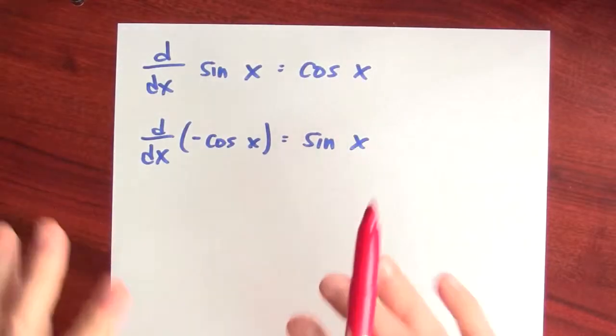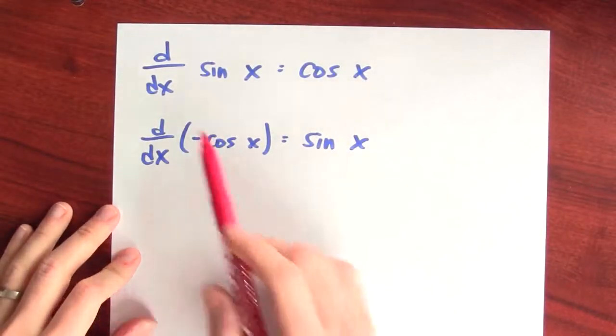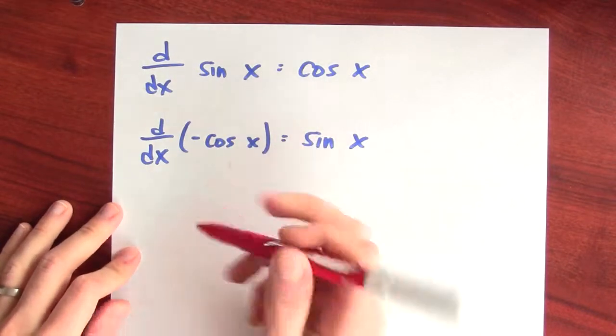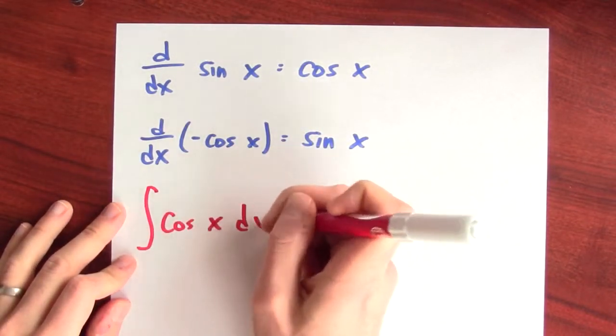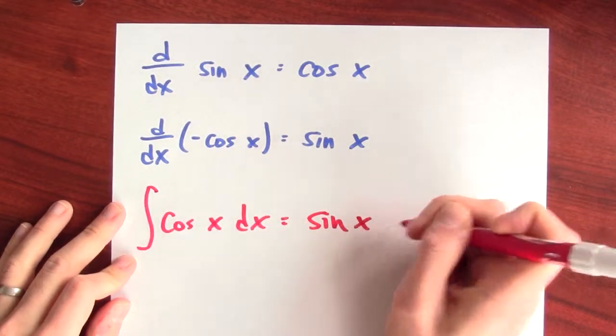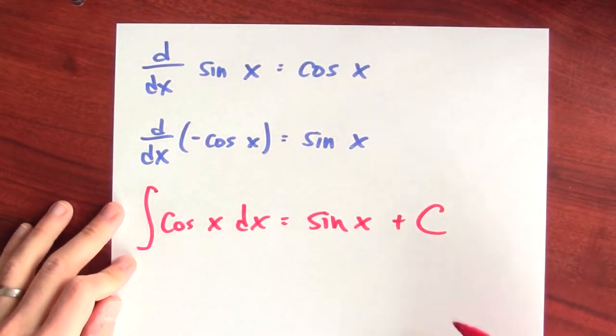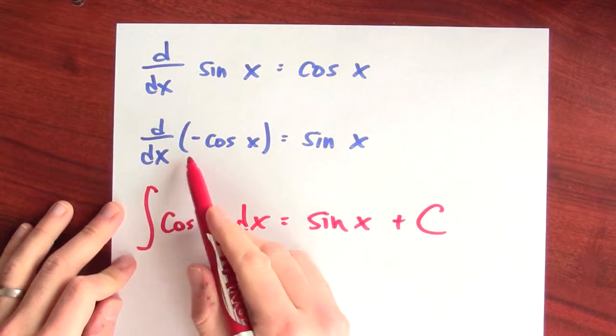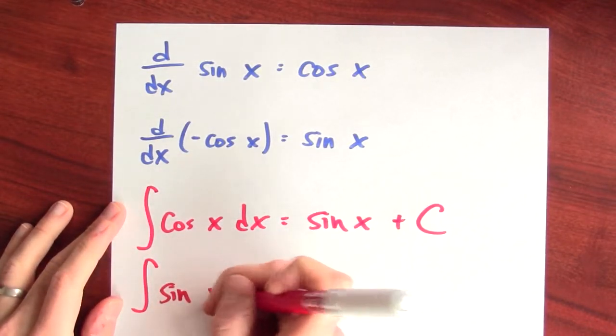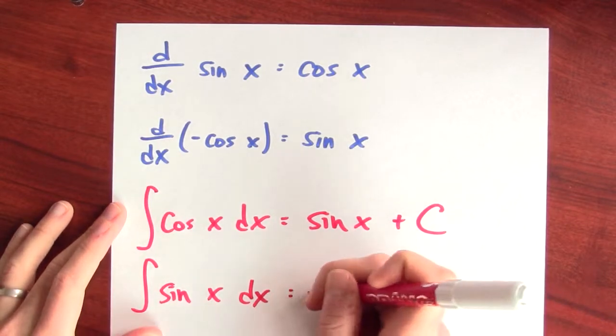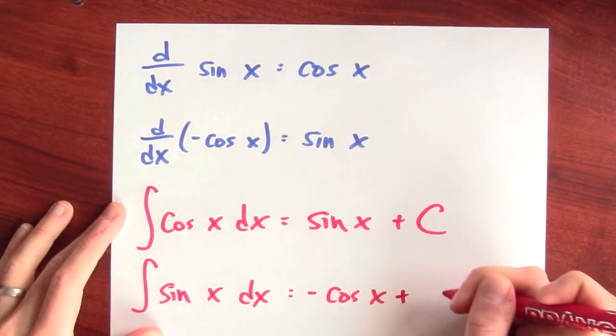So what are their anti-derivatives? Knowing this, now I know something about the anti-derivatives. If the derivative of sine is cosine, then the anti-derivative of cosine is sine plus c. And if the derivative of negative cosine is sine, that means the anti-derivative of sine is negative cosine plus c.